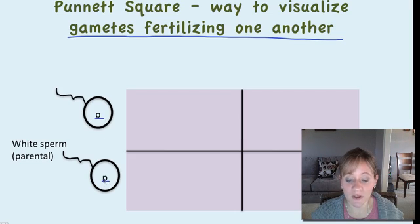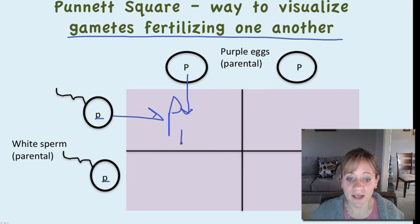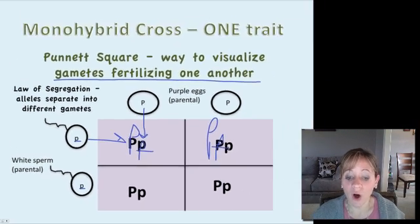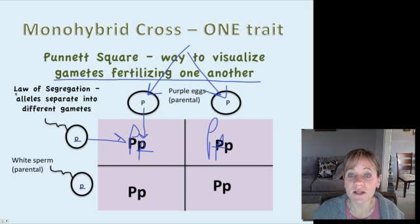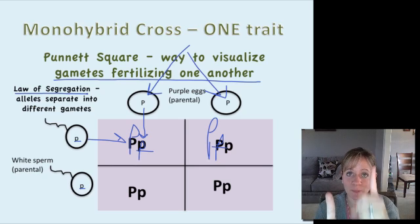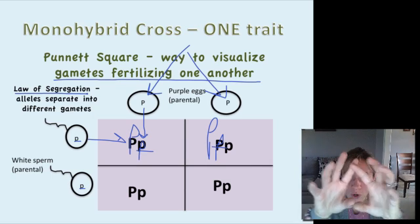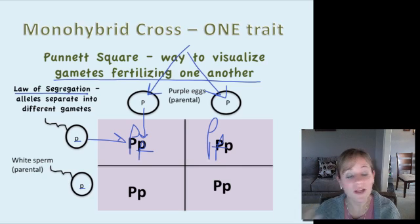In the Punnett square, on one side we have the sperm — the white flower's sperm, which are little p. On top we have the eggs from the purple flower, which are big P. When you cross them, you bring down and across and get big P, little p in every box. Now, how do we know that the purple parental flower gives a big P to each gamete? This is a law Gregor Mendel stated called the Law of Segregation. It states that alleles on two different chromosomes will separate into different gametes — which happens during meiosis 1 and 2 when homologous chromosomes and then sister chromatids separate from each other.